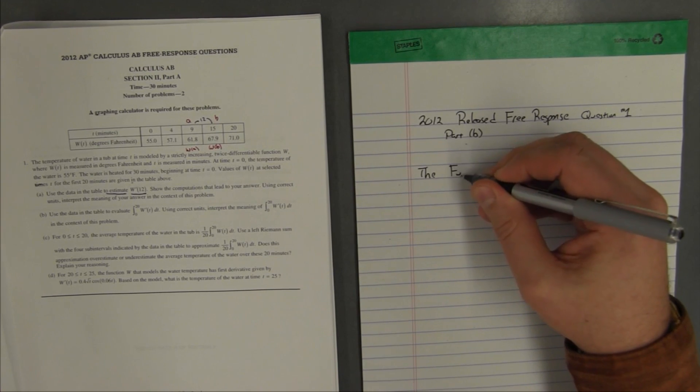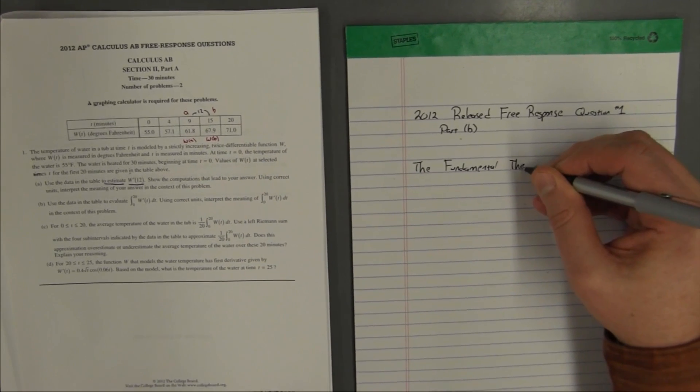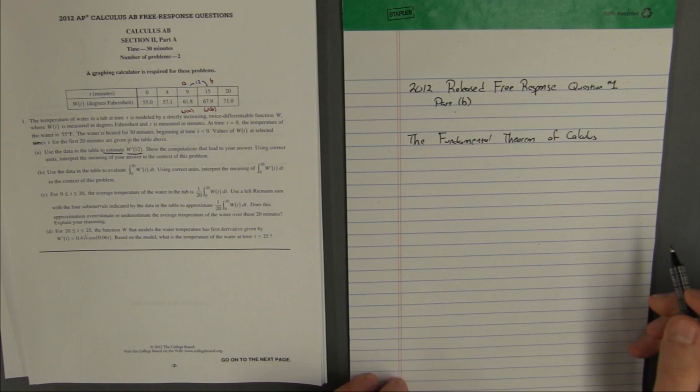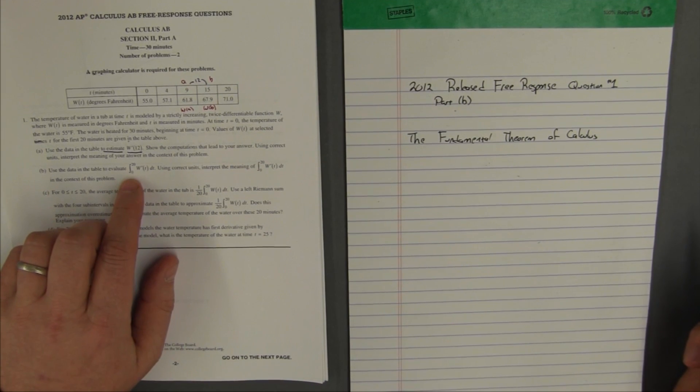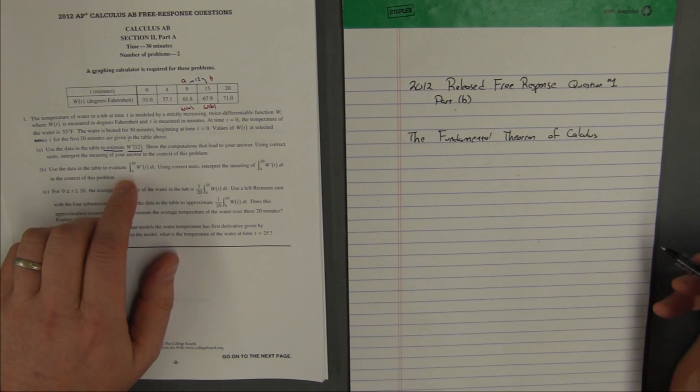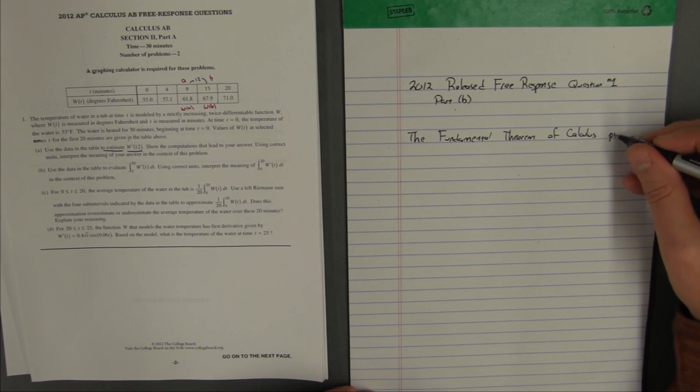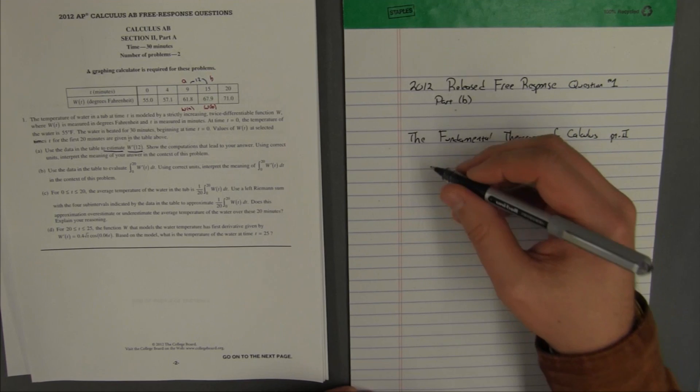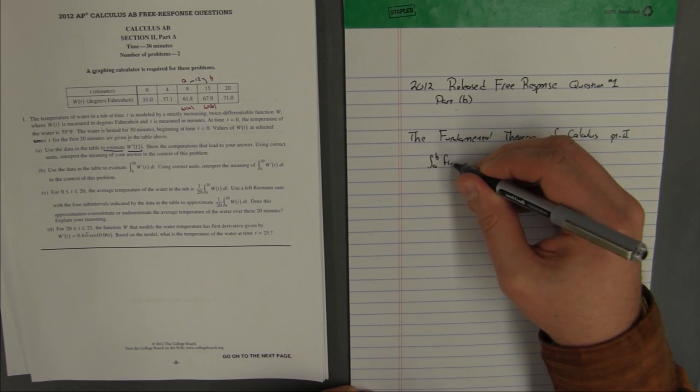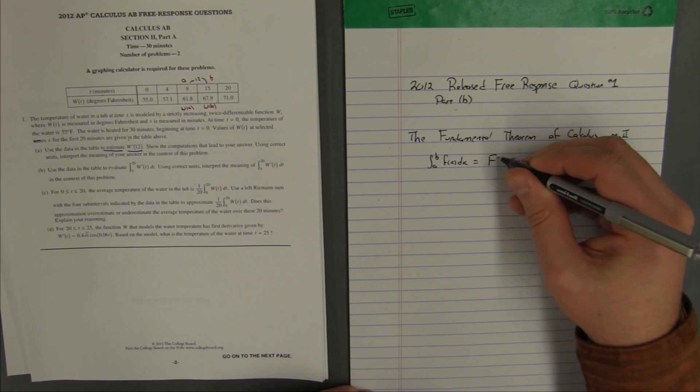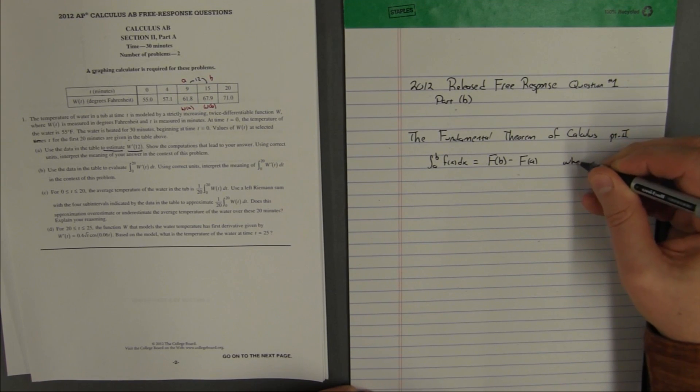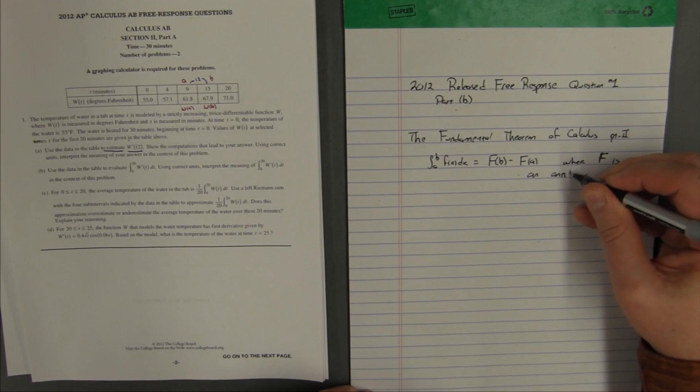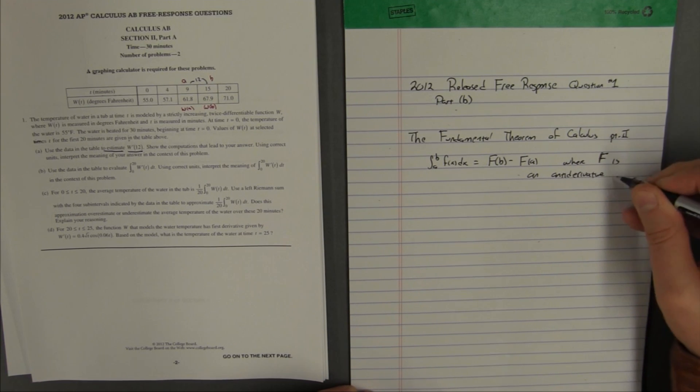And in fact, the fundamental theorem of calculus talks about the relationship between the integral and the derivative. And if we have an indefinite integral, we're really probably looking at part one of the fundamental theorem of calculus. Since we're looking at a definite integral, that's going to be the part two of the fundamental theorem of calculus. And that fundamental theorem of calculus, part two, says that the integral from a to b of f of x dx is equal to capital F of b minus capital F of a, where capital F is an antiderivative of small f.